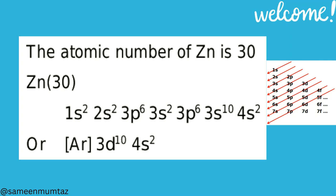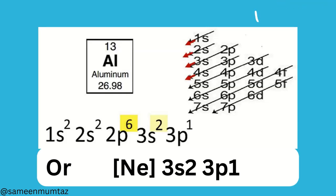Number 2, Zinc atomic number 30. 1s2 2s2 2p6 3s2 3p6 3d10 4s2, or argon plus 3d10 4s2.